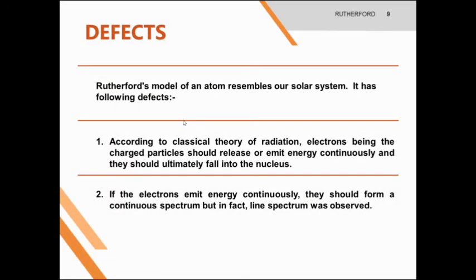Defects. Rutherford's model of an atom resembles a solar system, but it has the following defects. According to the classical theory of radiation, electrons, being charged particles, should release or emit energy continuously, and they should ultimately fall into the nucleus — but this is not happening. Number two: if the electrons emit energy continuously, they should form a continuous spectrum, but in fact, we observe a line spectrum.